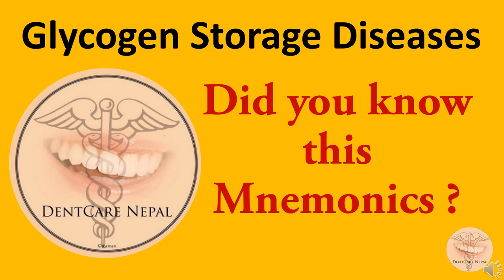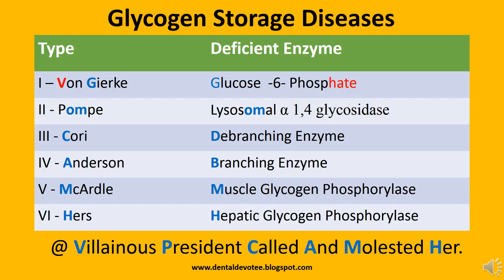Hello everyone, today I am here with a mnemonic to easily memorize the six glycogen storage diseases and the respective enzyme deficiencies associated with them. We have six different glycogen storage diseases: type 1 Von Gierke, type 2 Pompe, type 3 Cori, type 4 Anderson, type 5 McArdle, and type 6 Hers.